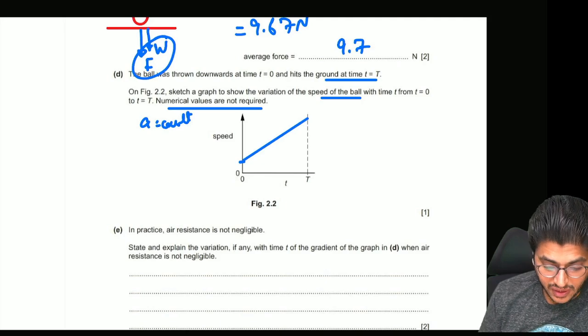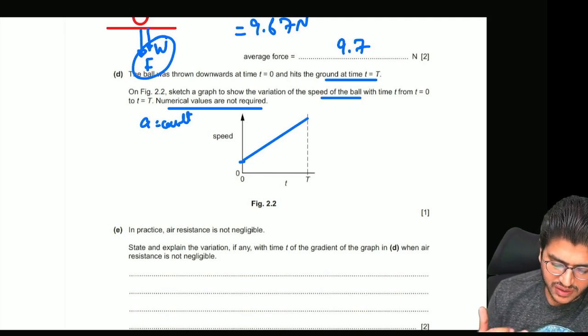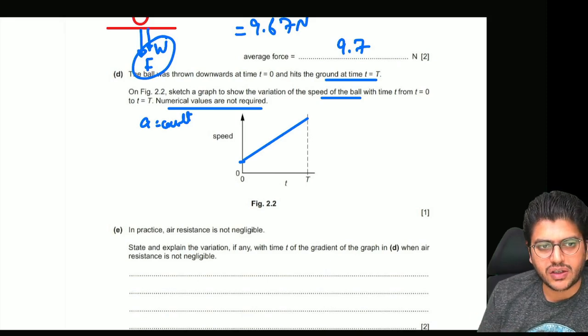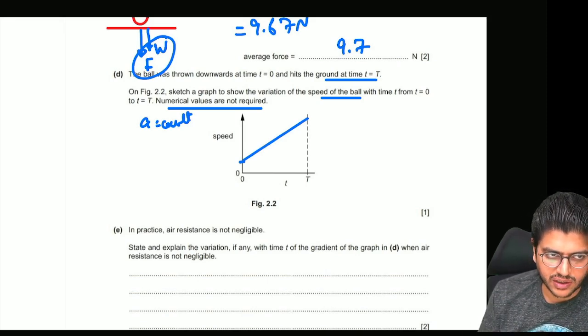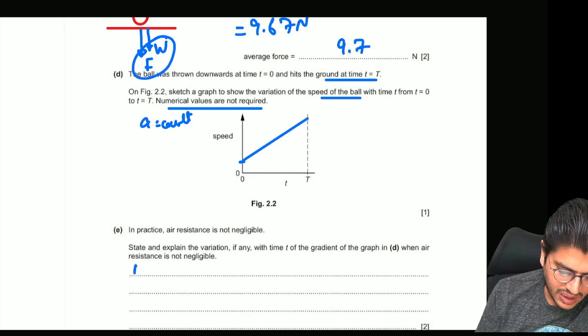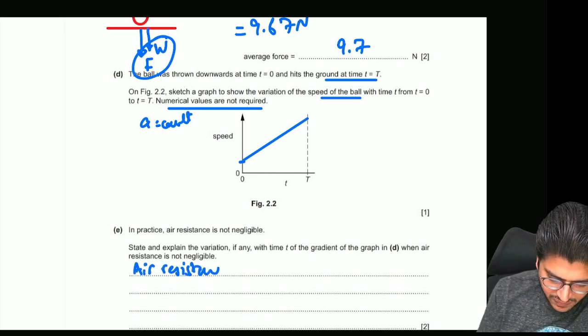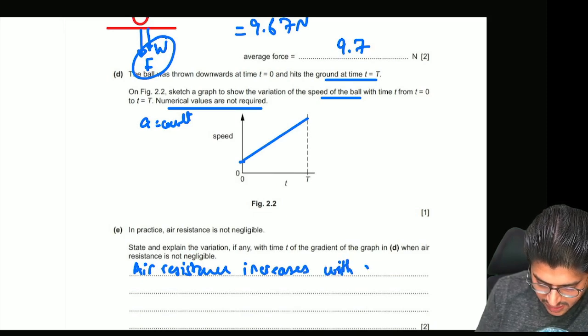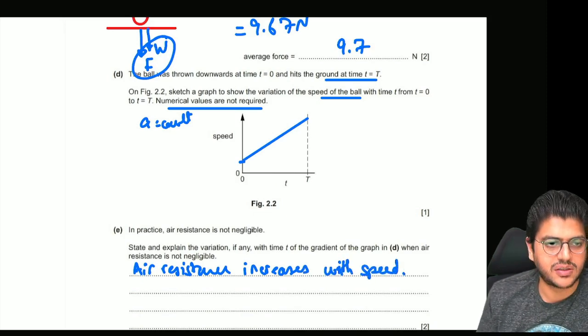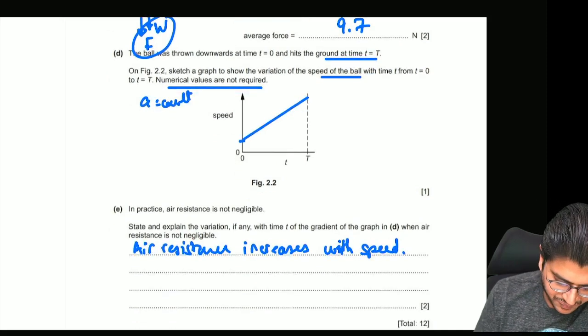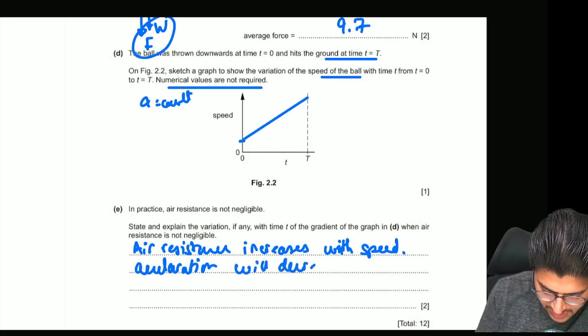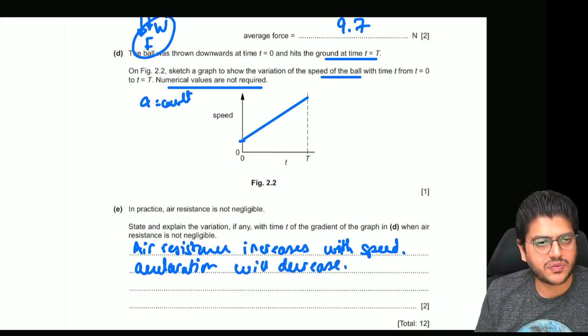In practice, air resistance is not negligible. State and explain any variation. I have to explain the theory as well rather than just what will happen with the graph. Explain the variation of the gradient when air resistance is not negligible. First of all, air resistance increases as your speed increases, so your acceleration will decrease.